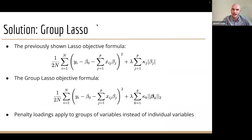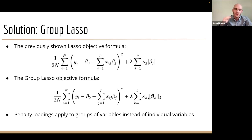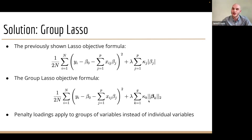We ended up doing this with group lasso. The standard lasso objective function has a beta term for each parameter, but the group lasso objective function handles groups of betas — groups of coefficients — and takes the L2 norm of each group, with a separate penalty loading factor for each group. We were able to put every single variable into its own group, except for the state indicator variables, which we put all together into one group, so they were either all chosen or all not chosen. They actually ended up being chosen, so we didn't have to force them into the model.